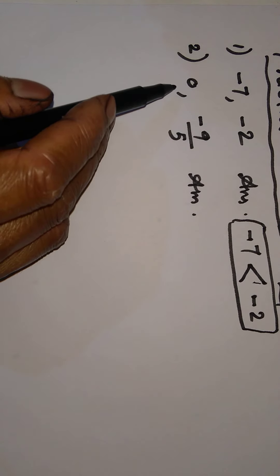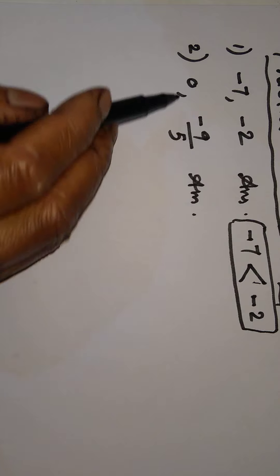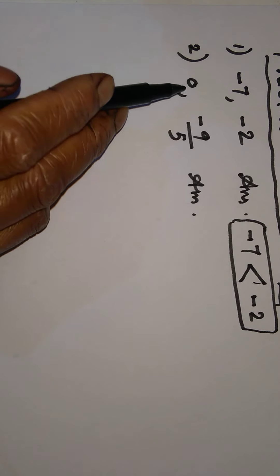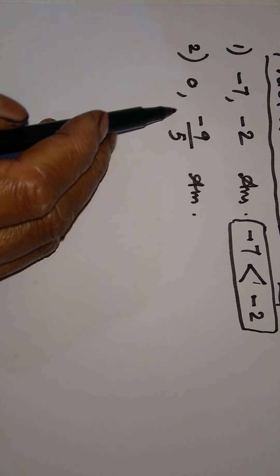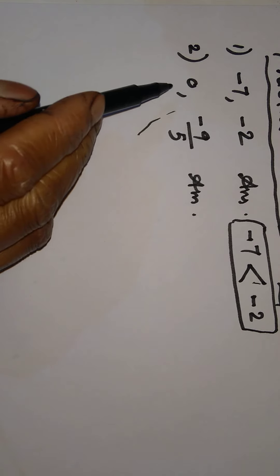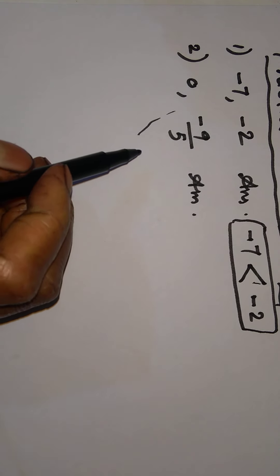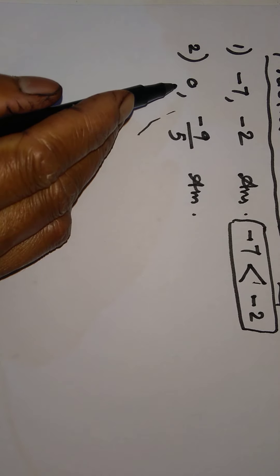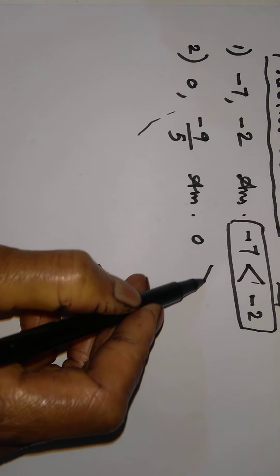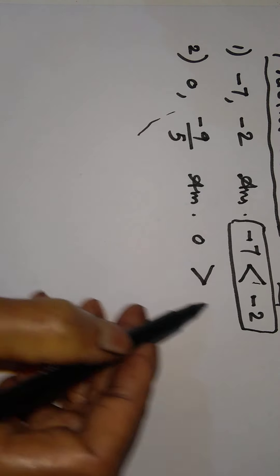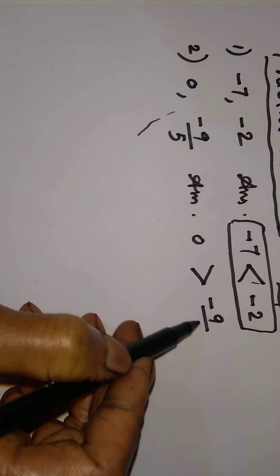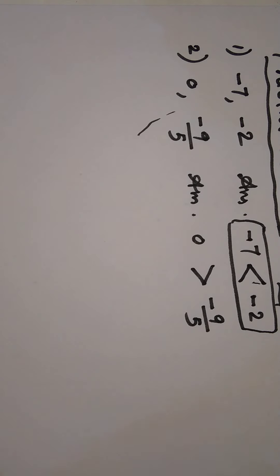Now see the next question: 0 and minus 9 upon 5. We know that 0 is bigger than all negative numbers. Zero is greater than every negative number, so we can directly write: 0 is greater than negative 9 by 5.